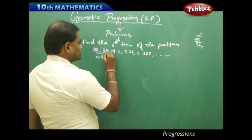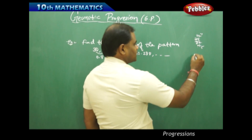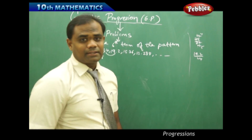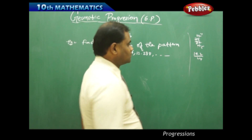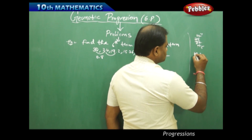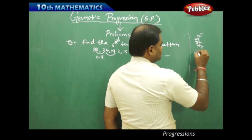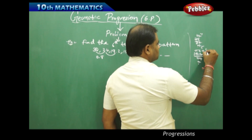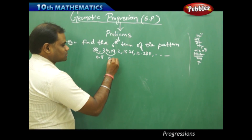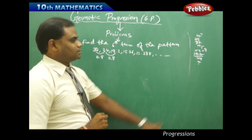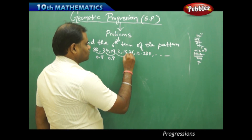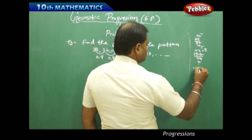Similarly I take the ratio of 19.2 and 24. I clearly see that the common ratio here is also 0.8 when calculated.